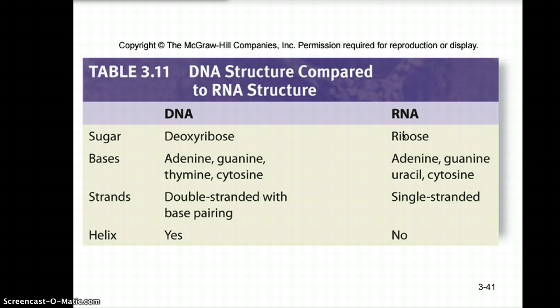To compare DNA and RNA: the five-carbon sugar of DNA is deoxyribose, while in RNA it is ribose. The nitrogenous bases of DNA are adenine, guanine, thymine, and cytosine (AGTC). RNA has adenine, guanine, and cytosine as well, but uses uracil instead of thymine. DNA is a double-stranded molecule with base pairing, forming a double helix. RNA is a single-stranded molecule and does not form a helix.